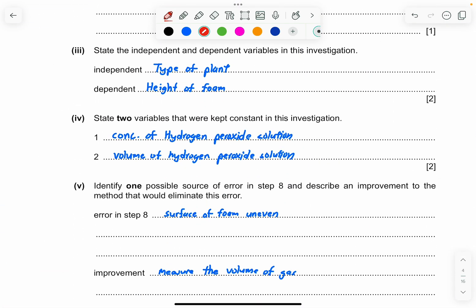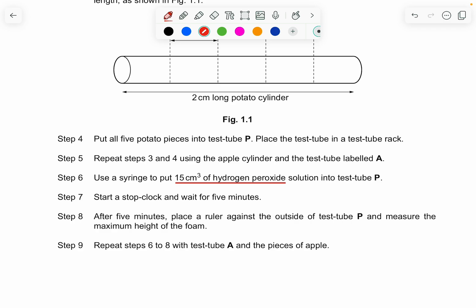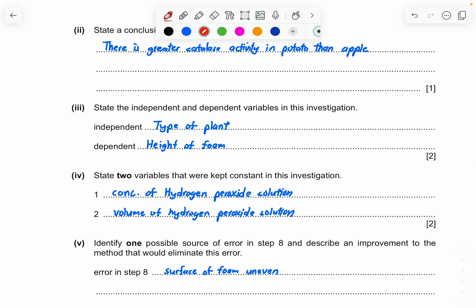Now we go to the next one. State two variables that will be kept constant in this investigation. For any question that has constant CV or constant variable, you can always check whether it's the solution they've added remains constant. Like for example, 15 centimeter cube is being placed in test tube P. And then at the same time, test tube A is also being added the same. So you can always mention it's either the concentration of the hydrogen peroxide or the volume of the hydrogen peroxide solution. You can also say the time interval is the same. We are using the stopwatch and stop. We start at the same time, stop at the same time. And you record the same time intervals. It has to be the same for all experiments being made. And you can also say the size, the number of pieces of plant tissue. We are using, since the experiment only used one, so this is the constant variable.